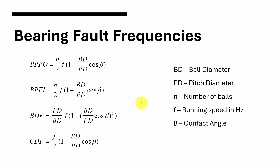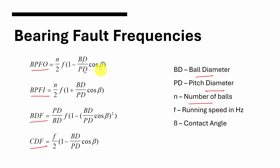Before going for fault identification of any component, we must first identify the fault frequencies. In case of bearing, there will be four fault frequencies. BPFO is ball pass frequency outer race, BPFI is ball pass frequency inner race, then ball defect frequency and cage defect frequency. These are the equations for calculating the fault frequencies, where N is the number of balls, BD is the ball diameter, PD is the pitch diameter, beta is the contact angle, and F is the running speed in hertz.